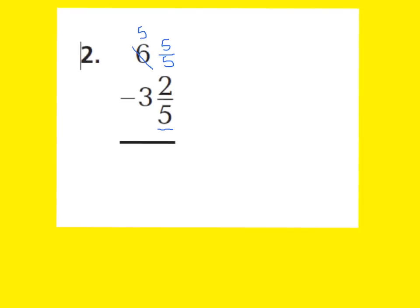If I subtracted 1 whole away from 6 wholes, I would have 5 wholes left. But if I'm taking away a whole, I'm going to be adding a whole to my fraction. I know that the denominator is out of fifths, so a whole would be 5 fifths. Now I have a fraction I can subtract from. So: 5 fifths minus 2 fifths — 5 minus 2 is 3, and I keep my denominator the same — 3 fifths. Then 5 minus 3 is 2, so the answer is 2 and 3 fifths.